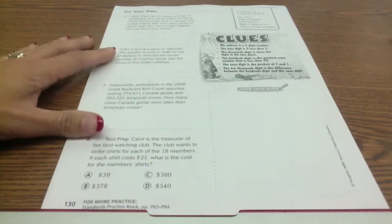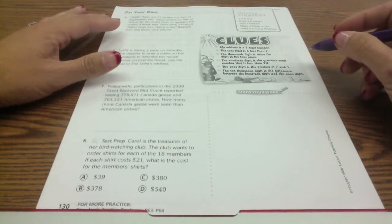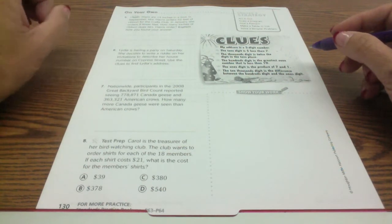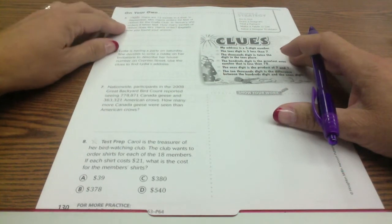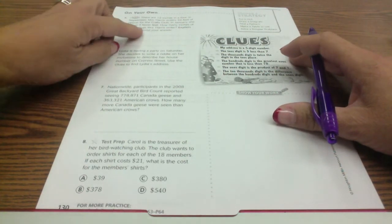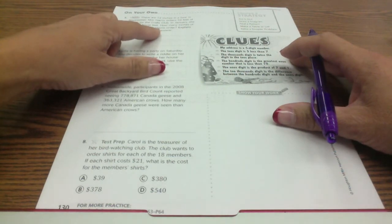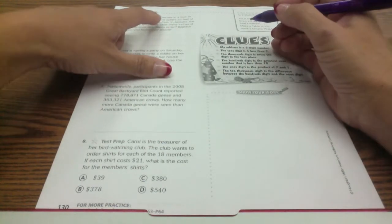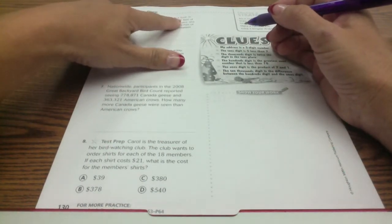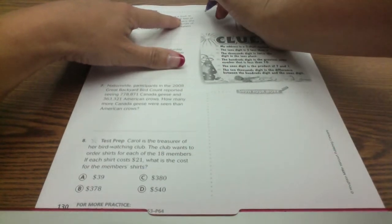Number five, there are 12 inches in a foot. In September Mrs. Harris orders 32 feet of ribbon for the crafts club. In January she ordered nine fewer feet. How many inches of ribbon does Mrs. Harris order? So she orders 12 inches times the 32 feet. I'm just going to do that up here.